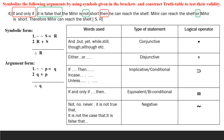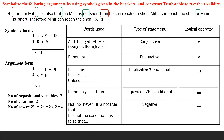The argument form will be: curl curl P triple bar Q, second premise Q wedge P, therefore Q. The number of propositional variables is 2, so the number of rows will be 2 raised to N, that is 2 raised to 2, which equals 4.